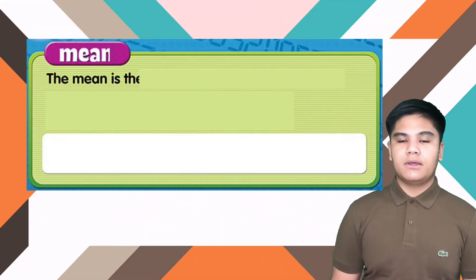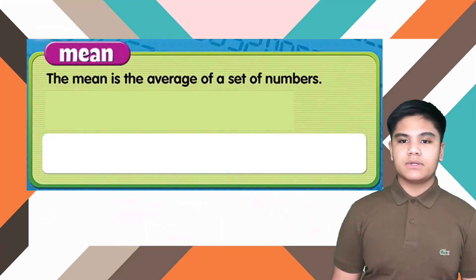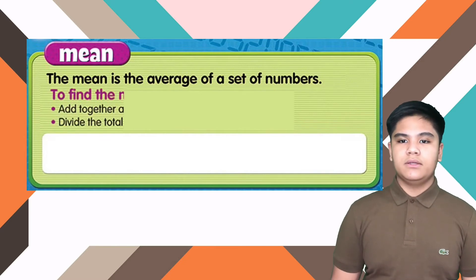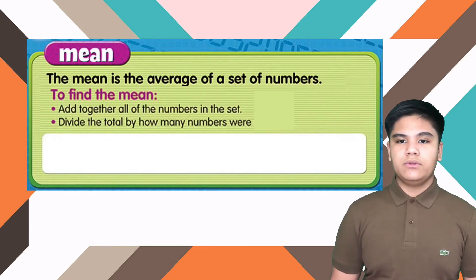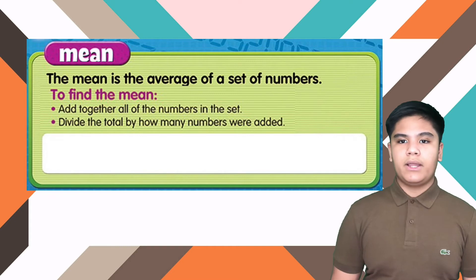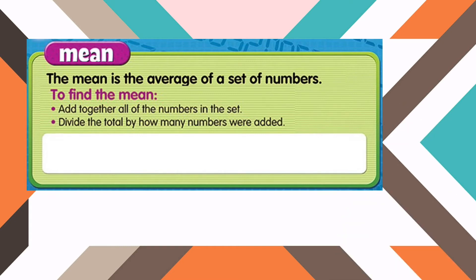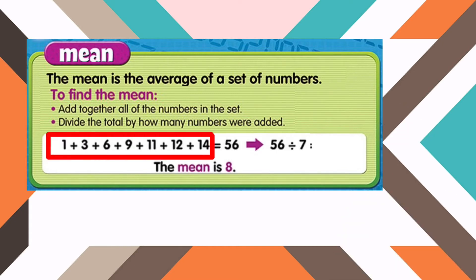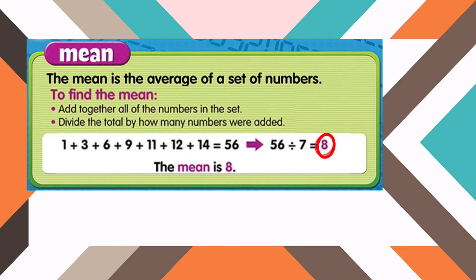Mean. The mean is the average of a set of numbers. To find the mean, you must first add together all of the numbers in a set. And second, you must divide the total by how many numbers were added. For example, 1 plus 3 plus 6 plus 9 plus 11 plus 12 plus 14 equals 56. Then, 56 divided by 7 equals 8. Therefore, the mean is 8.